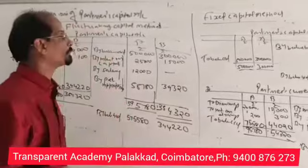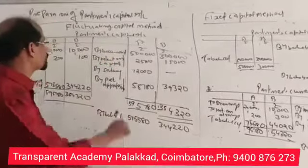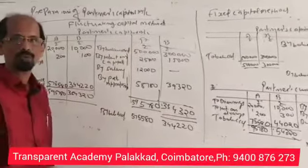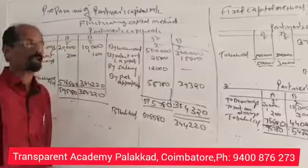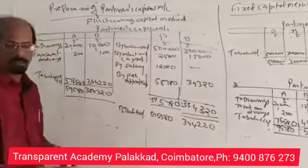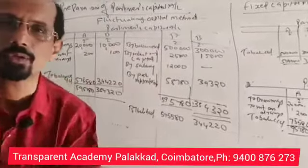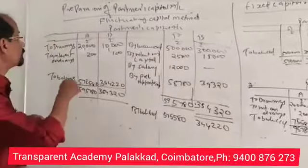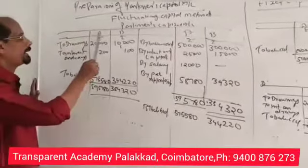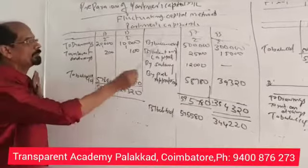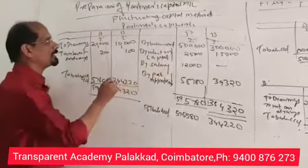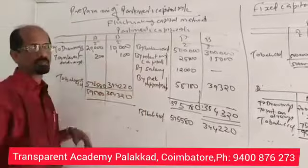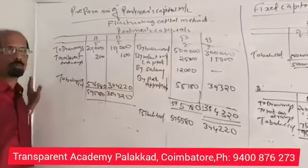If we prepare a capital account in the fluctuating capital method, this is the partner's capital account. If we have a partner's capital account, one is A and one is B. Particulars: A, B on both sides — that is A's capital and B's capital. This is how we prepare a columnar format.